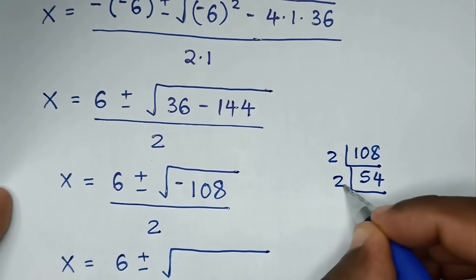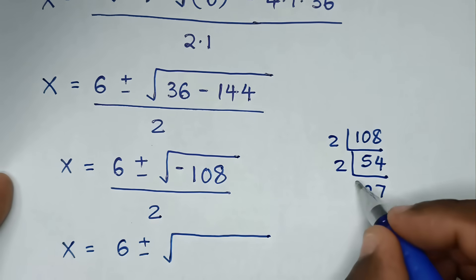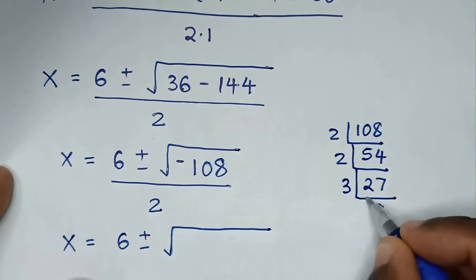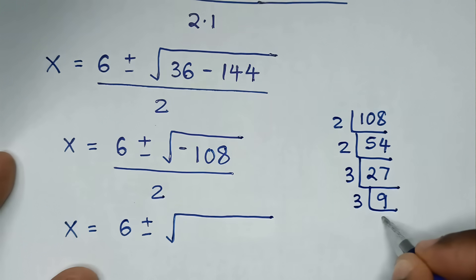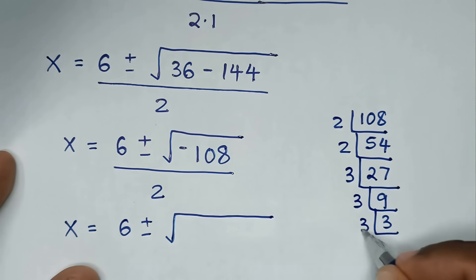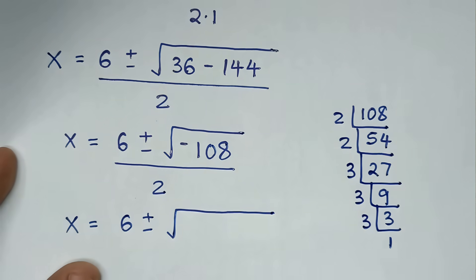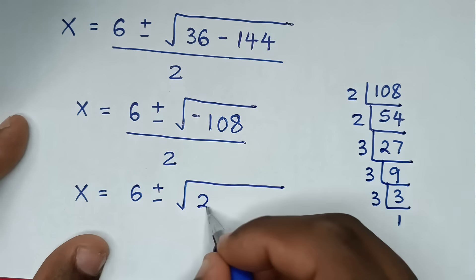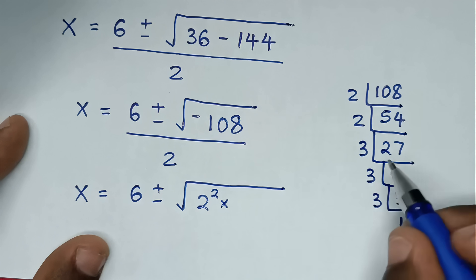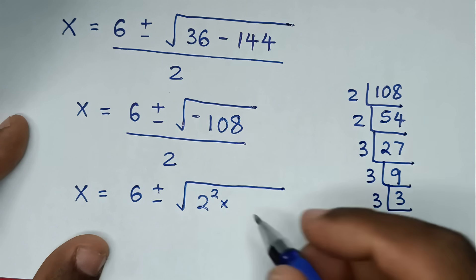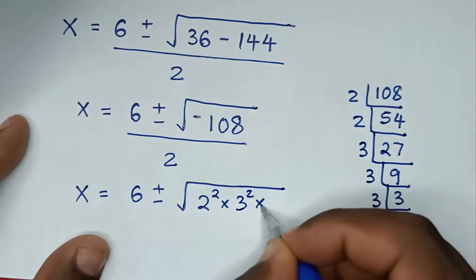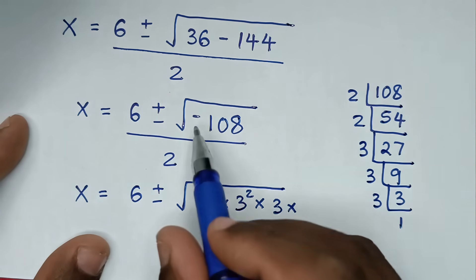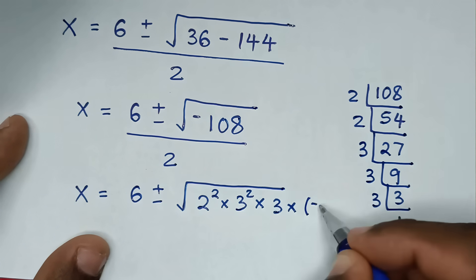54 divided by 2 is 27, divided by 3 is 9, divided by 3 is 3, divided by 3 is 1. So 108 expressed with squared factors is 2 squared times 3 squared times 3, and with the negative sign, times negative 1.